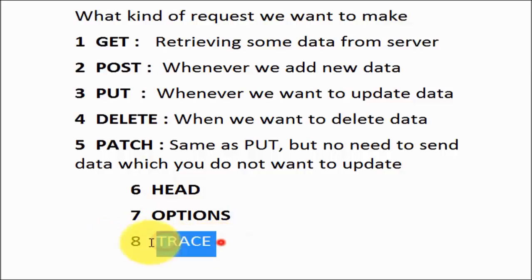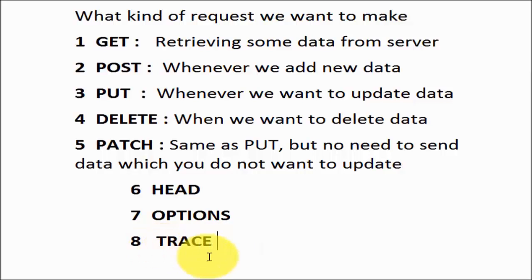Last is TRACE. TRACE means I want to check the format of my request. Whenever we are hitting any request, we may not know exactly what headers or body content we are sending to the server. We can use TRACE to see everything we send. Whatever we send to the server, in the response we get back the same header and same body, so we can inspect our request header and request body. TRACE sends back the same data to us and can be used for debugging purposes only.